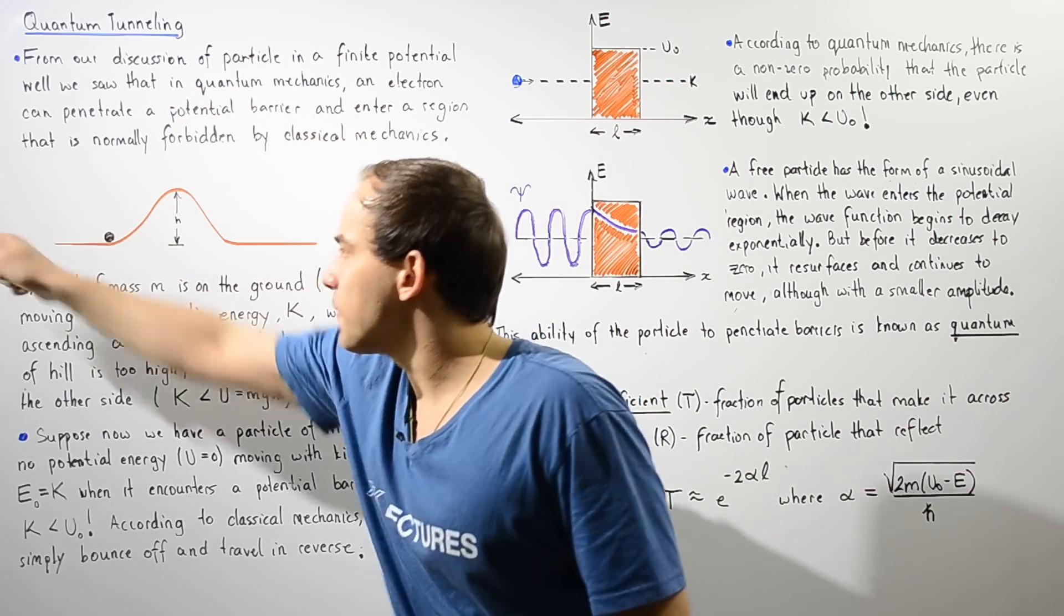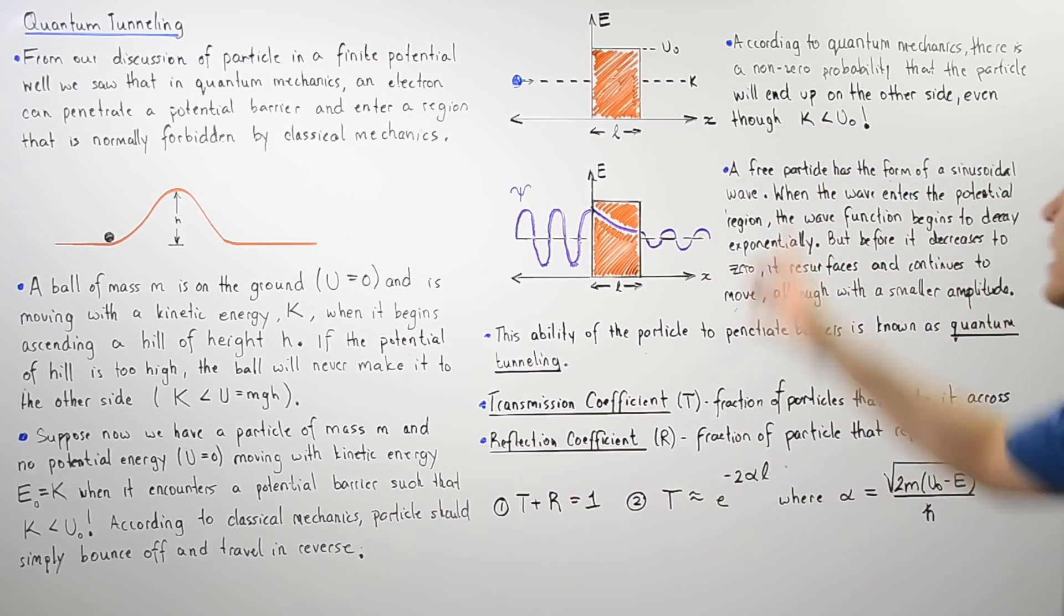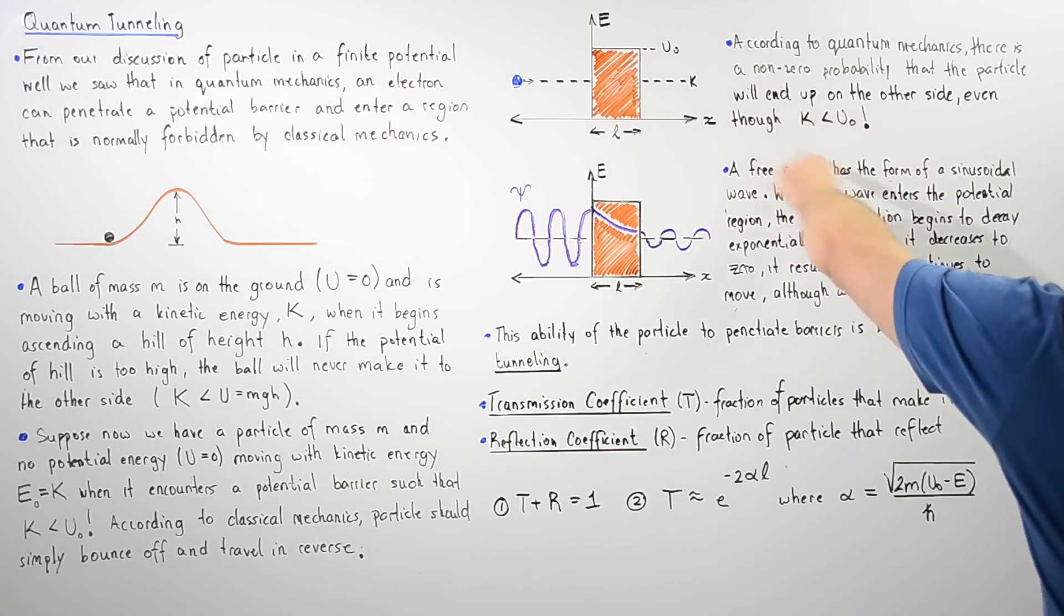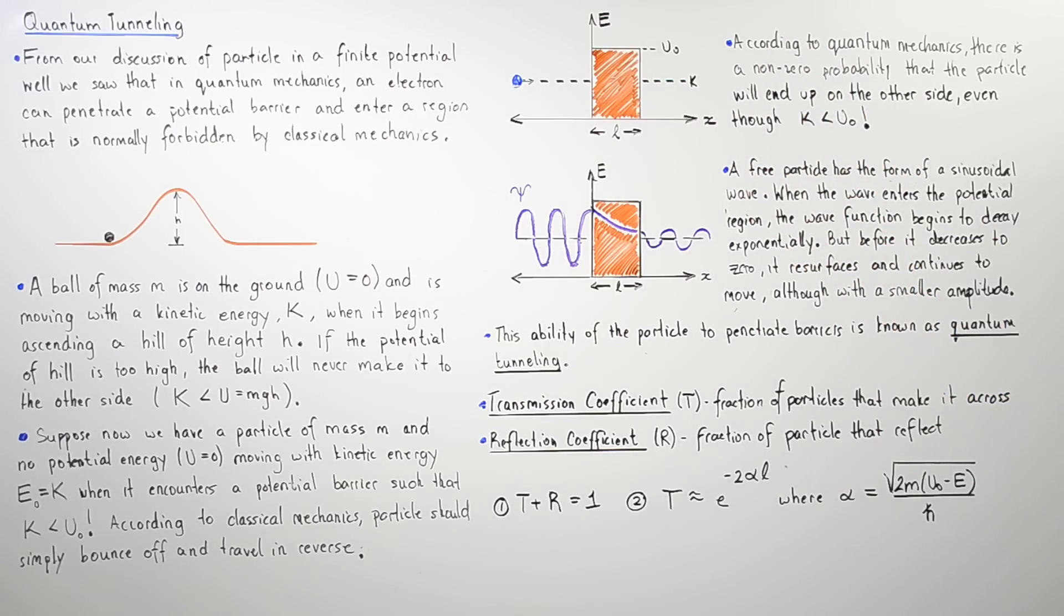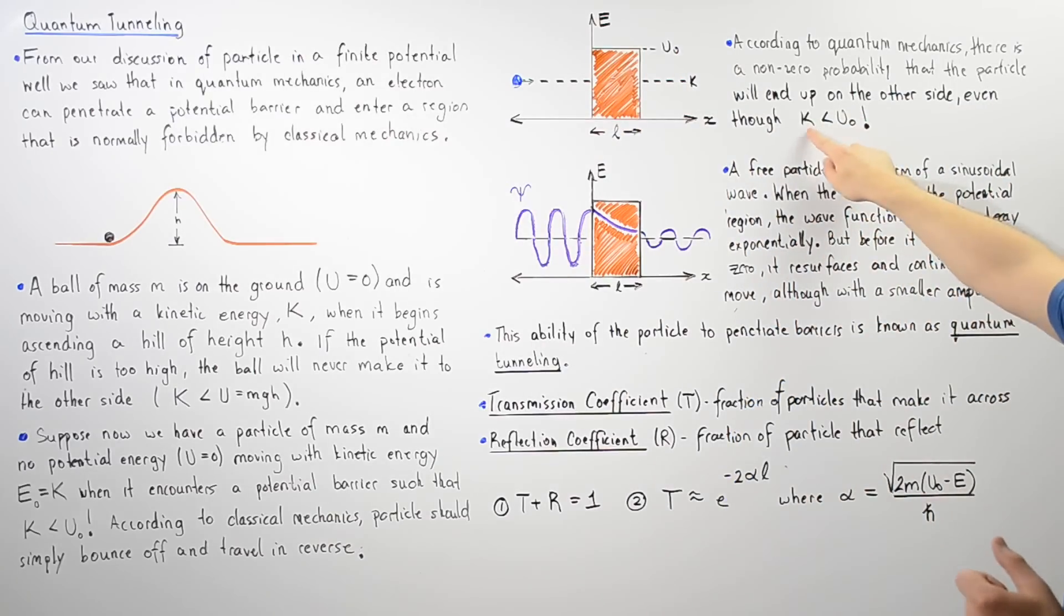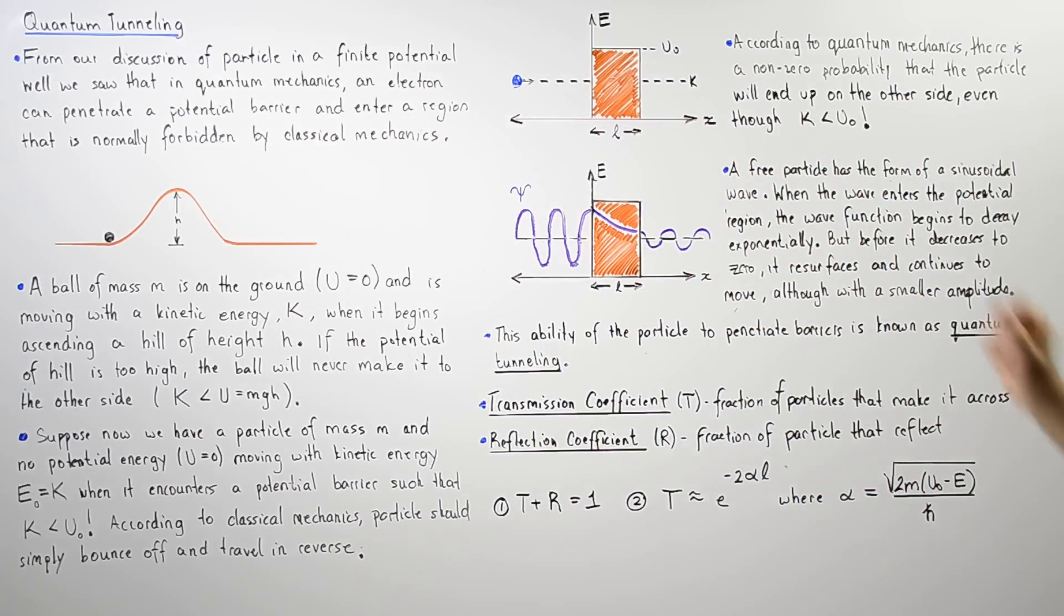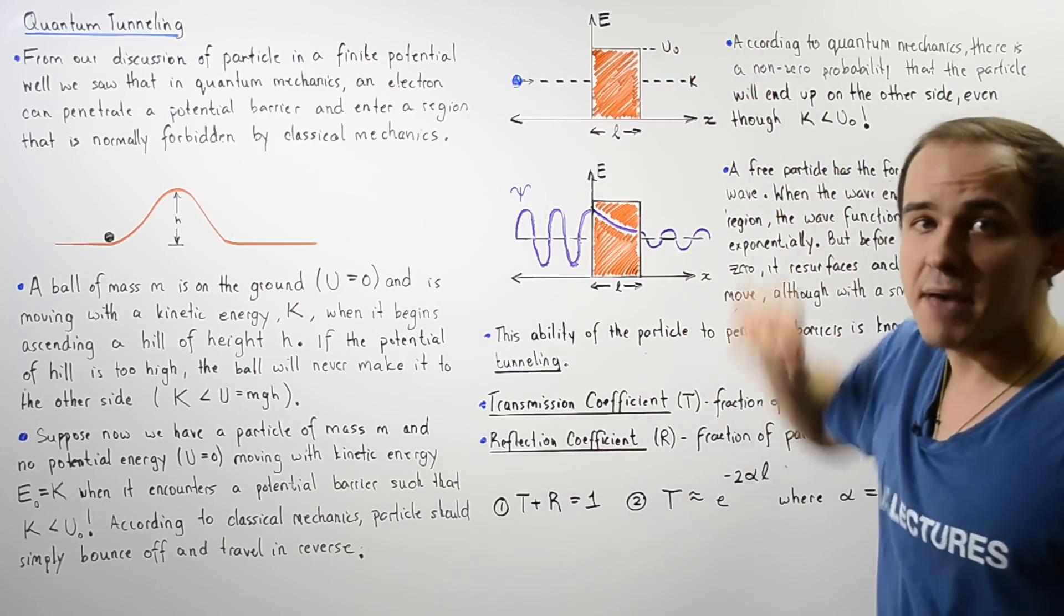So in quantum mechanics, there basically is a non-zero probability that the particle will actually end up on the other side of our barrier even though the kinetic energy of the particle is less than our potential energy of that barrier.